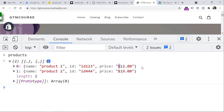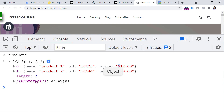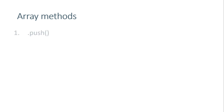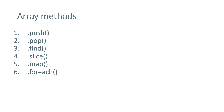What a loop does is iterate through each product or each member of the array based on your instructions, and then do something — for example, remove the dollar sign from every price of every product. There are many array methods at your disposal. The most commonly used ones are: push (the same method used in the data layer with 'dataLayer.push'), pop, find, slice, map, forEach (an alternative to the regular for loop), includes, filter, and reduce. You should definitely take a look at them.